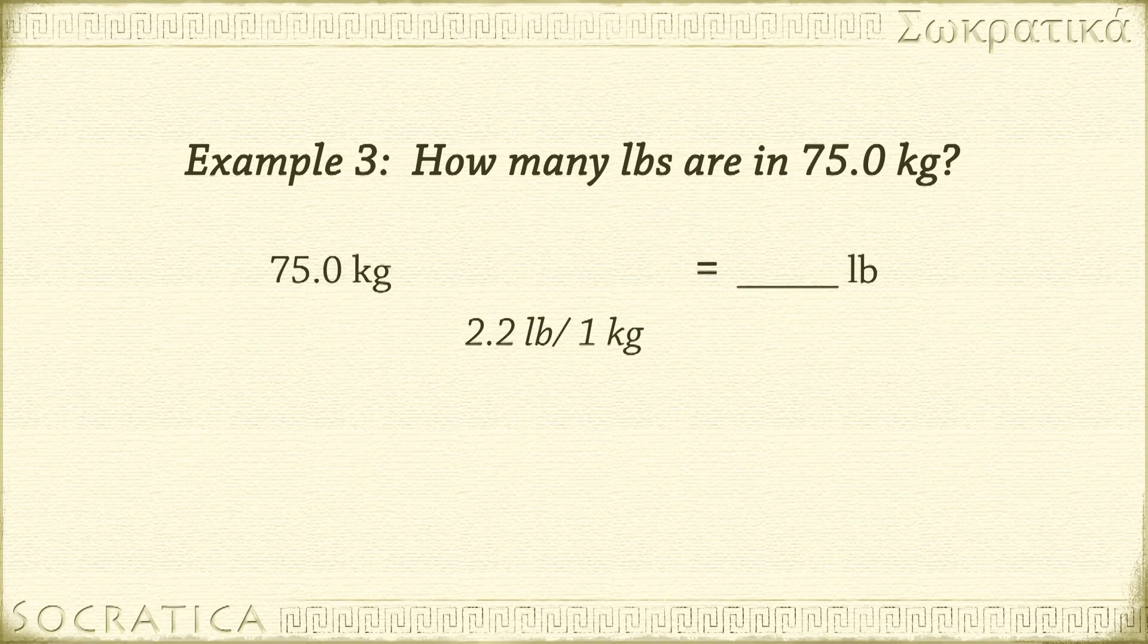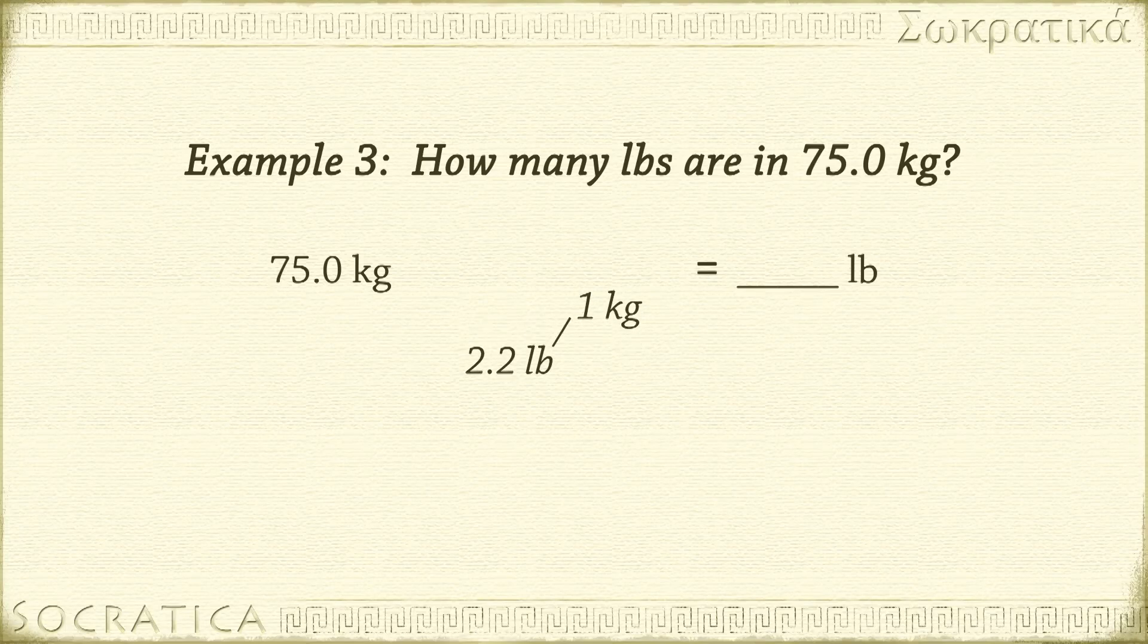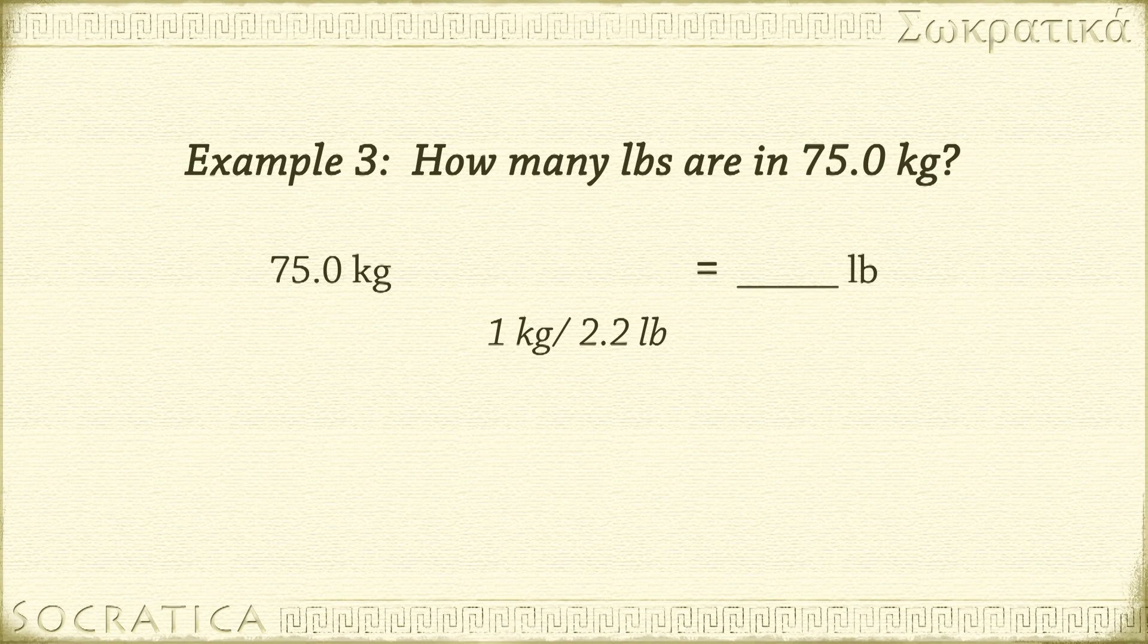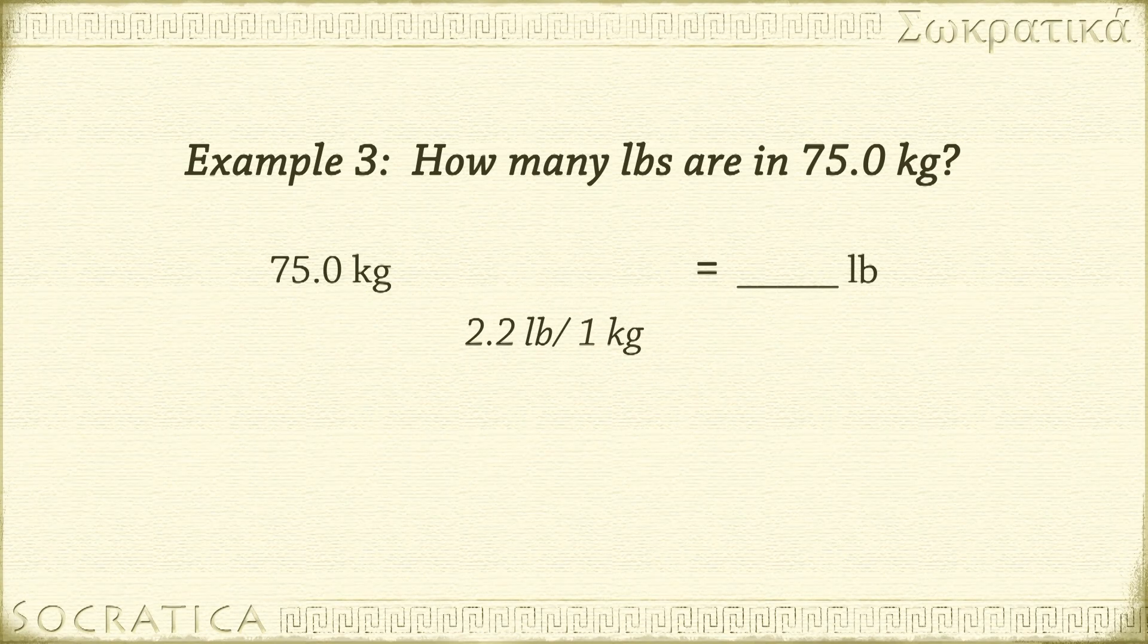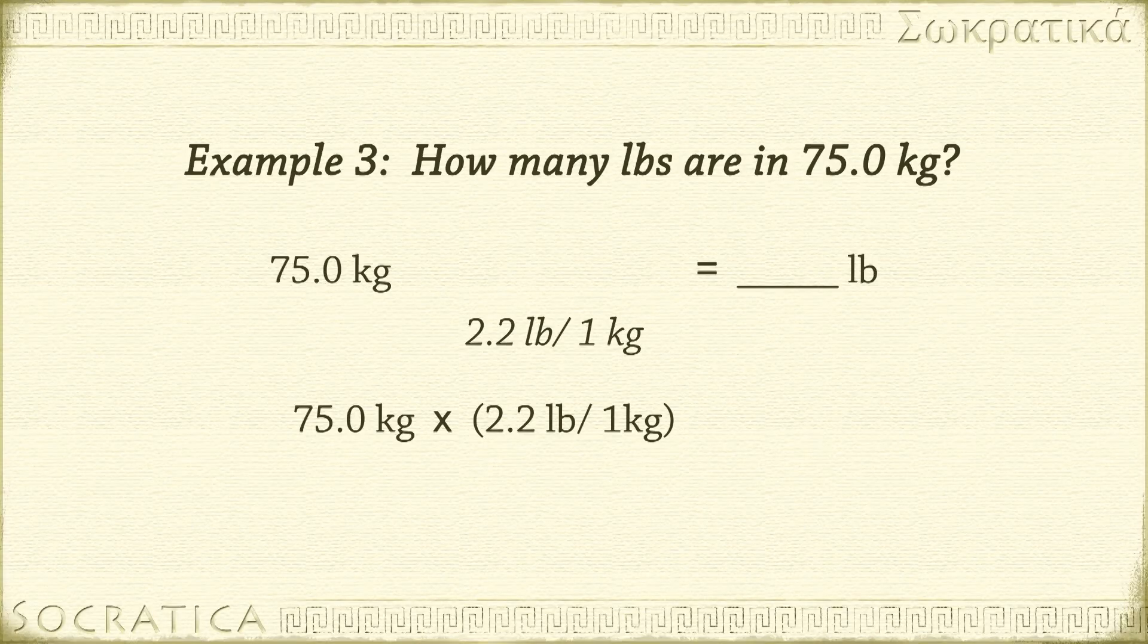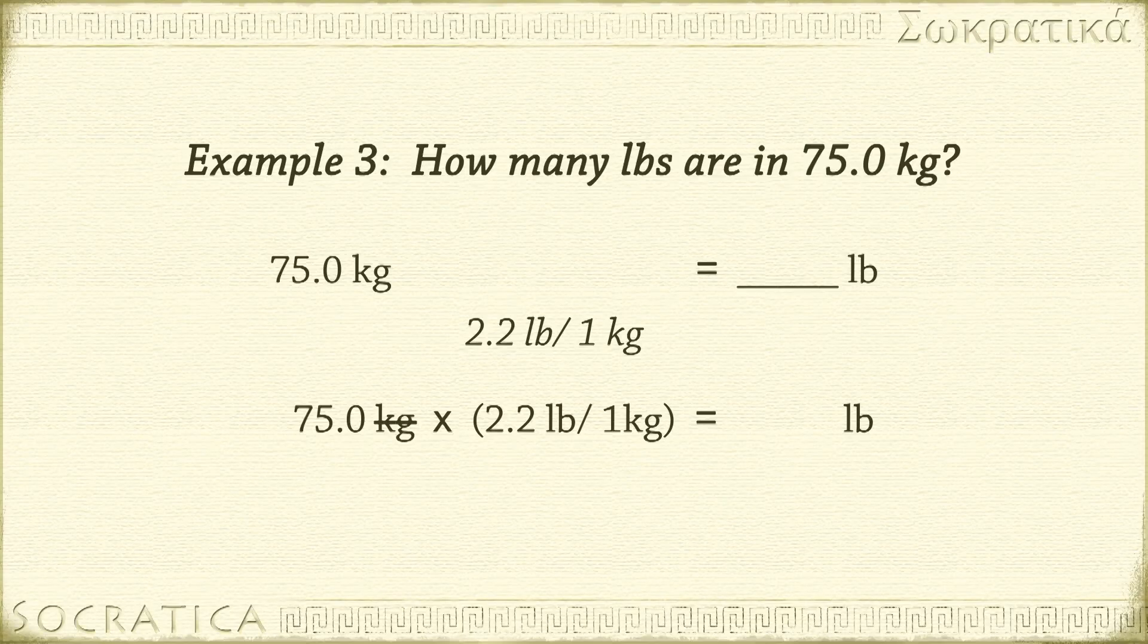As it turns out, we wrote that fraction in just the right way to solve this problem. Can you see that it would not be in the right order if I wrote it as 1 kg over 2.2 pounds? That fraction equals 1, but the units wouldn't cancel in our problem. So let's take that out and put it back the right way. 75.0 kg times 2.2 pounds over 1 kg equals some number of pounds. You can see that the units cancel. kg cancels kg, and we'll be left with just pounds, which is what we want to be left with in our final answer.